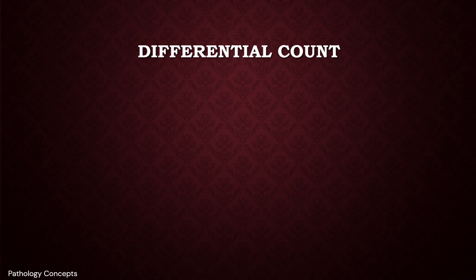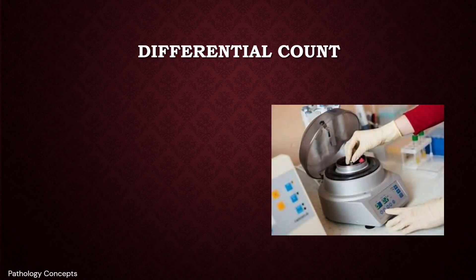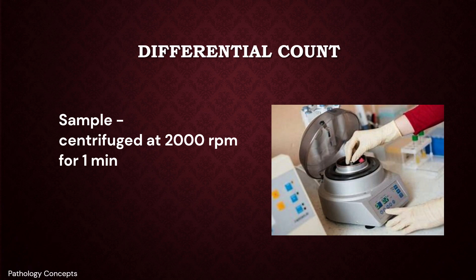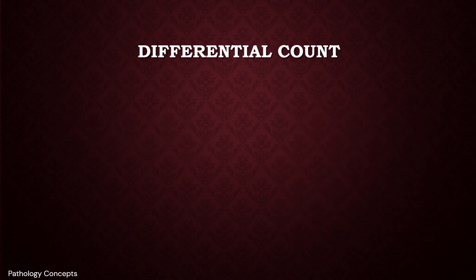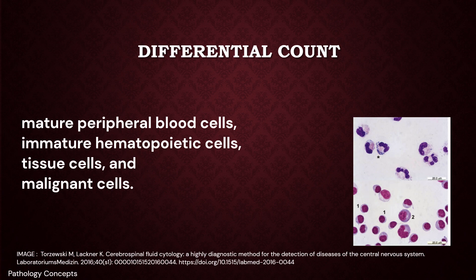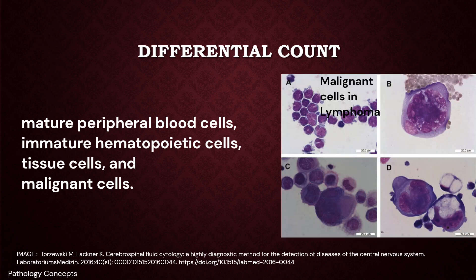For differential count, centrifuge the sample at 2,000 RPM for 1 minute. If RBCs are present, add a little acetic acid before centrifugation to lyse them. From the sediment, a smear is formed and stained with Leishman stain, then observed under the microscope. Cells seen in CSF may be divided into four categories: mature peripheral blood cells, immature hematopoietic cells, tissue cells, and malignant cells.